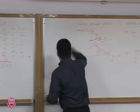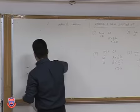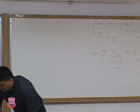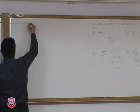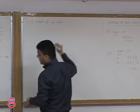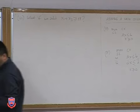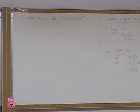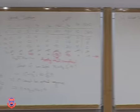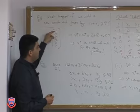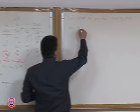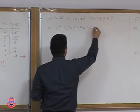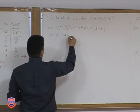Part 3: what if we add x1 + x3 ≥ 11? Is the previous solution still optimal? x1* + x3* = 2 + 8 = 10, and 10 is not ≥ 11, so x* cannot remain optimal.